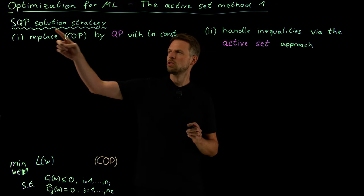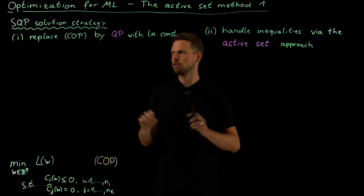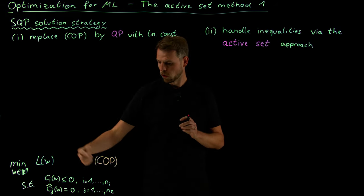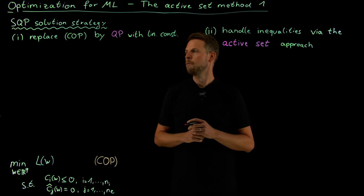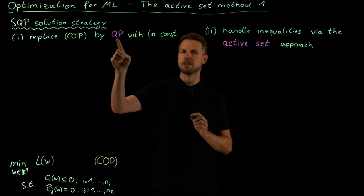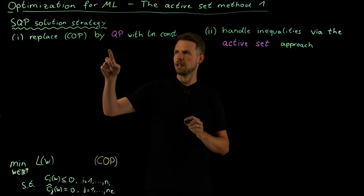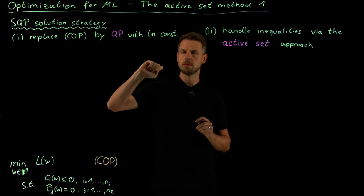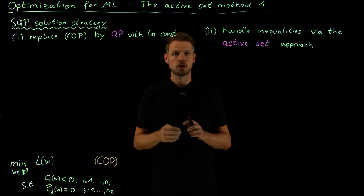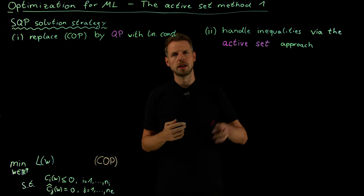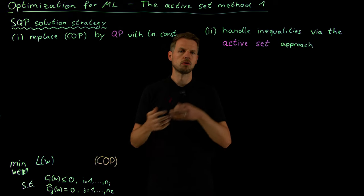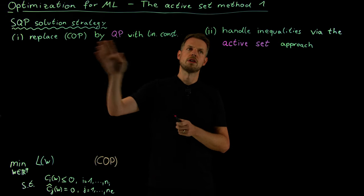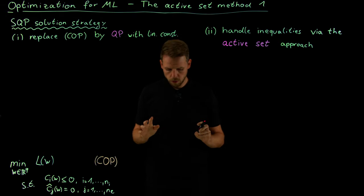Here is the solution strategy to our SQP problem. The idea is we have our constrained optimization problem, denoted by COP here, and we are going to replace it by a quadratic program — not once, but multiple times. This is what sequential quadratic programming means: we have a sequence of quadratic programs. We solve these one by one, update the quadratic program, solve the new version, and so on. There is a back and forth between part one and part two of our strategy.